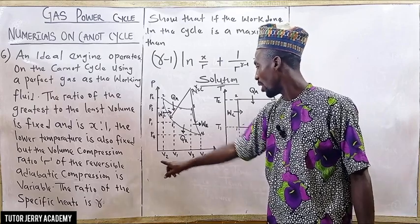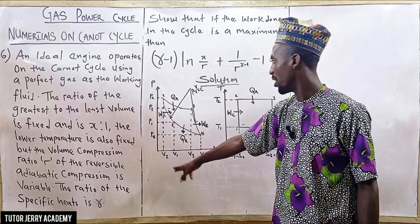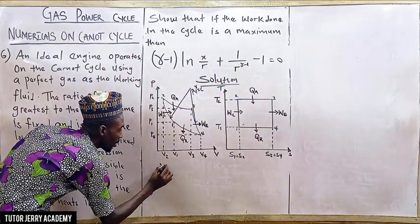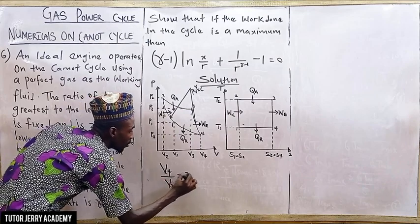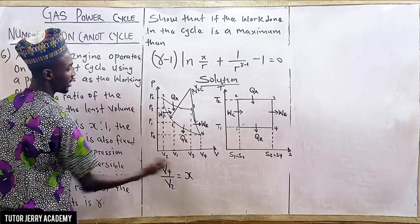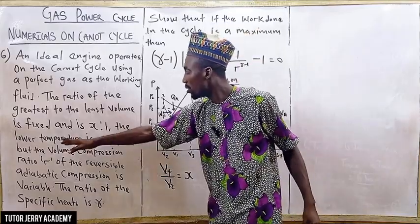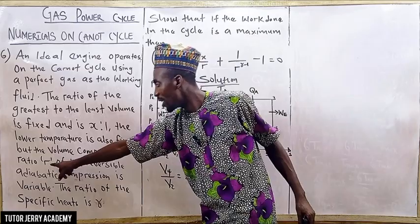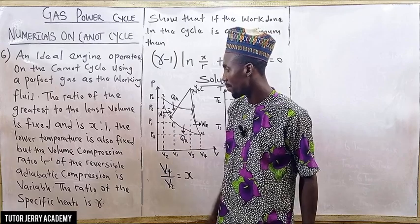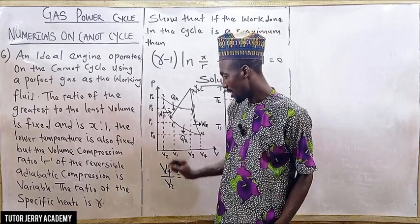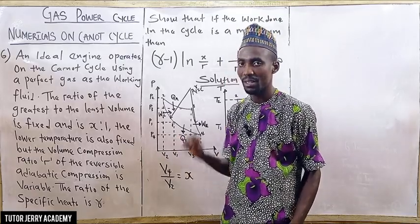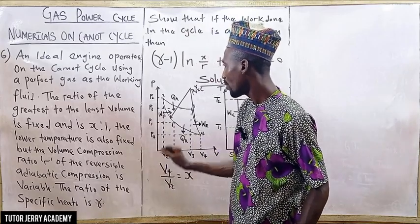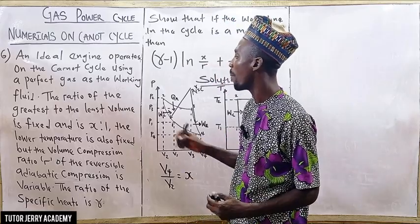So what they are saying is that the ratio of V4 over V2 is equal to s, because s ratio one is s. The lower temperature is also fixed, but the volume compression ratio, denoted by r, of the reversible adiabatic compression is variable, and the ratio of specific heats is gamma.